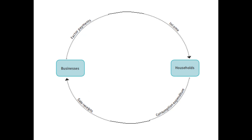All these players interact through what's called the circular flow model. Households provide labor to businesses and businesses pay wages in return. Businesses produce goods and services, which households buy using the wages they've earned. Money flows from households to businesses while goods and services flow in the opposite direction — it's a continuous loop that keeps the economy running.